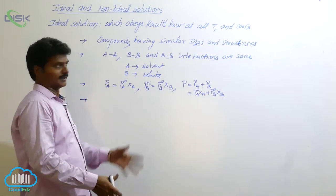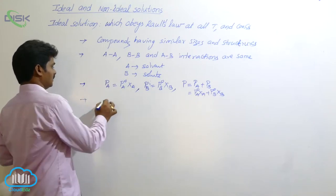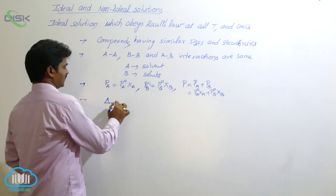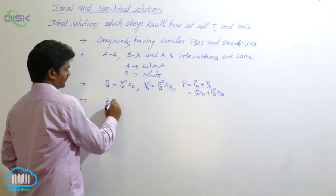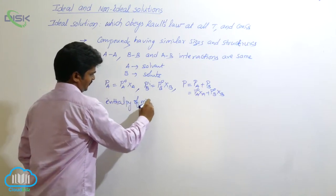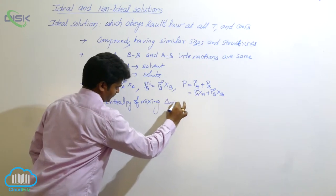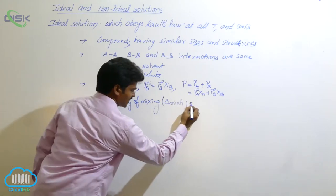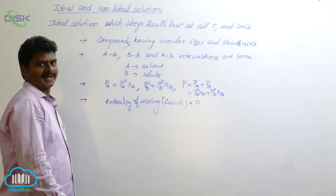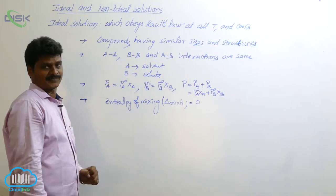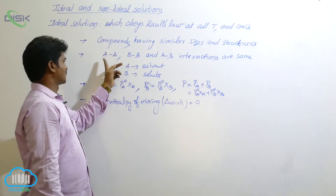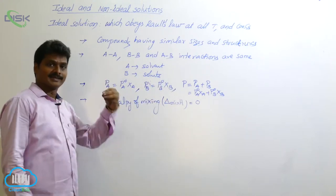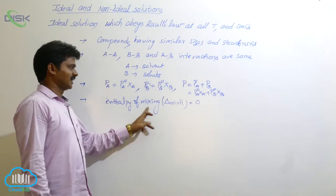Let's see the thermodynamic parameters for an ideal solution. For an ideal solution, we need to know delta H mix — enthalpy of mixing. For an ideal solution, its value is zero. Why is enthalpy of mixing zero? Because interactions among solvent-solvent, solute-solute, and solute-solvent are the same. That's why no energy is released or absorbed.